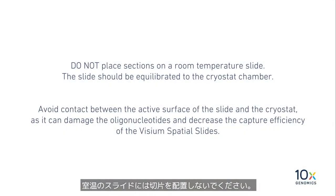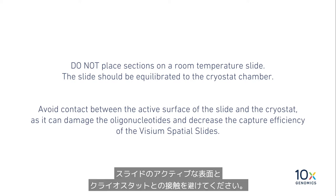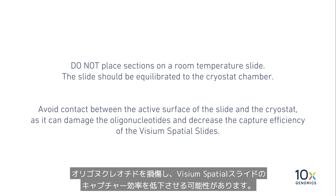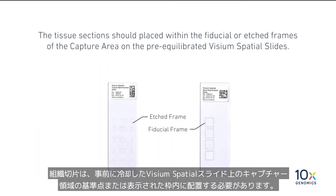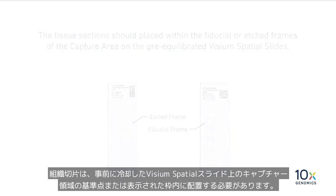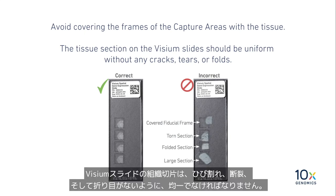Do not place sections on a room temperature slide. The slide should be equilibrated to the cryostat chamber. Avoid contact between the active surface of the slide and the cryostat, as it can damage the oligonucleotides and decrease the capture efficiency of the Visium Spatial slides. The tissue section should be placed within the fiducial or the edge frames of the capture area. Avoid covering the frames of the capture areas with the tissue. The tissue section on the Visium slides should be uniform without any cracks, tears, or folds.